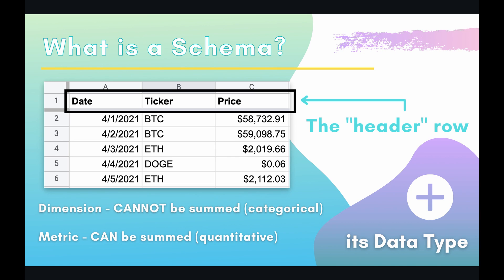With column C — price — this will definitely be a metric because we can take the average of these numbers, we can sum up these numbers; this is our quantitative variable. Now column A with date is kind of a tricky question because you could argue it is a dimension or a metric. But for this example and this video, we're going to label date as a dimension because we're not really going to be summing or taking the average of our dates.